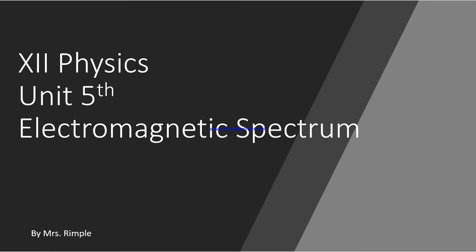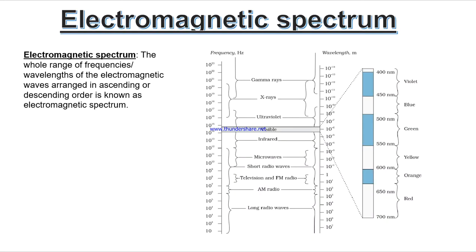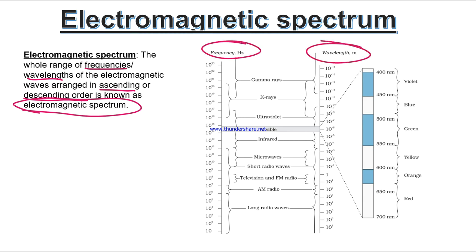Hello students, welcome to my channel. Let's start the next topic of Unit 5 which is electromagnetic spectrum. This is a most important topic, so understand it carefully. First, let's understand the definition: electromagnetic spectrum is the whole range of frequency or wavelength of electromagnetic waves arranged in ascending (increasing) or descending (decreasing) order. This whole pattern is known as the electromagnetic spectrum.